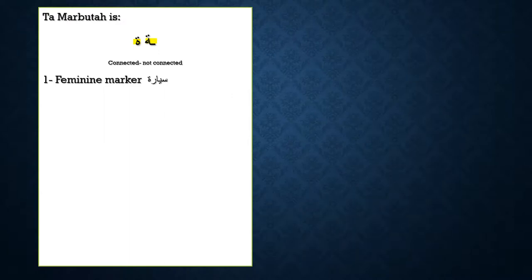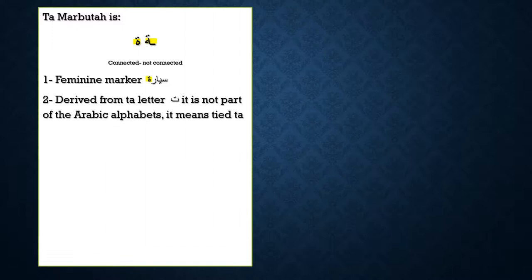Something you have to know about ta marbuta: first of all, ta marbuta is a feminine marker. It's always at the end of the word, and when you see it you can tell this noun is feminine. When I say 'sayyara,' sayyara is a car — car is feminine. In Arabic language, gender is so important. This is one of the ways you can distinguish between feminine and masculine.